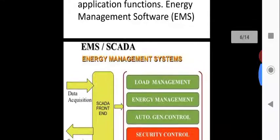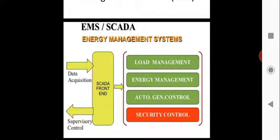The energy management system includes SCADA — supervisory control and data acquisition — along with load management, energy management, automatic generation control, and security control. These four things form the energy management system.